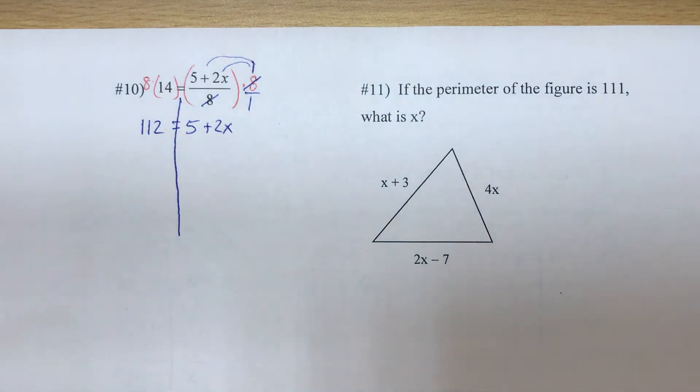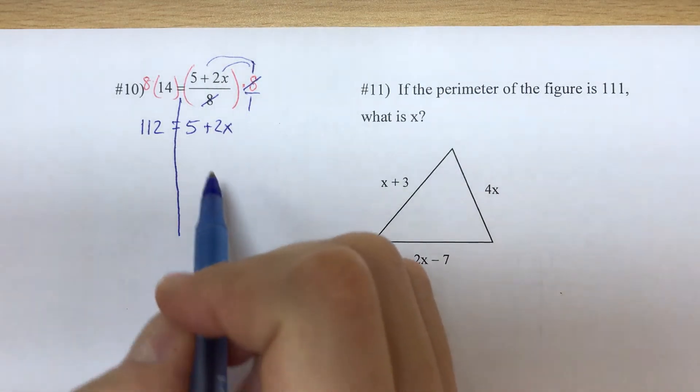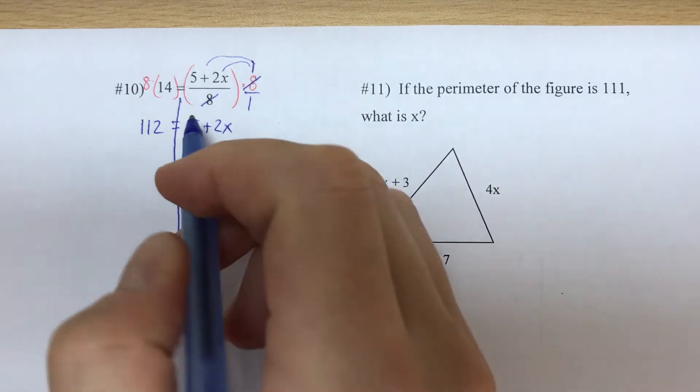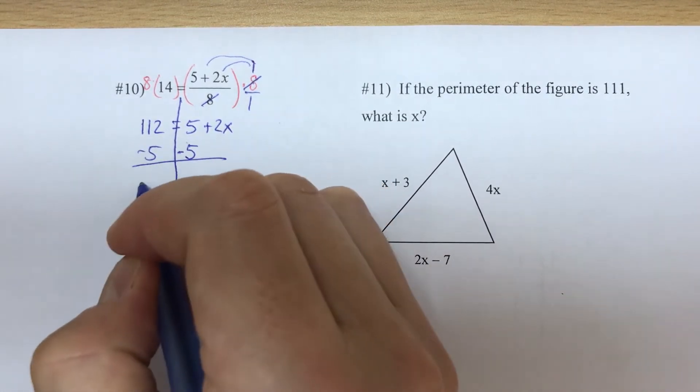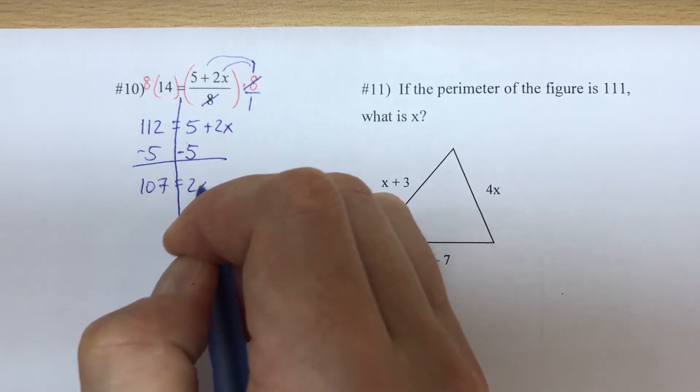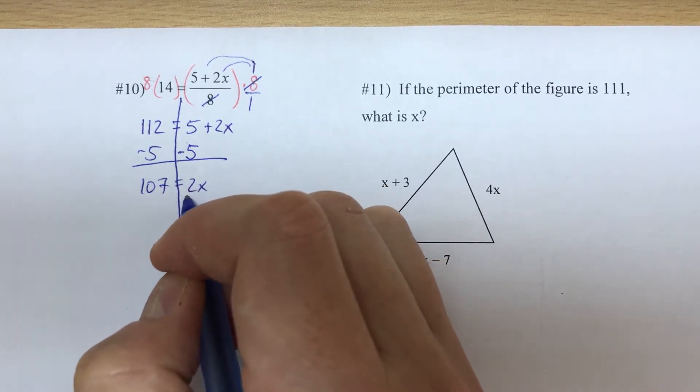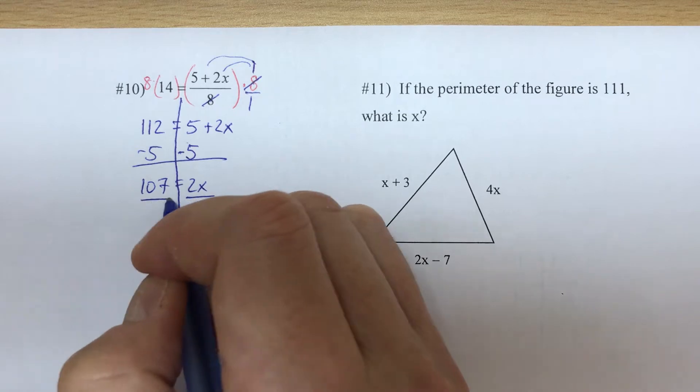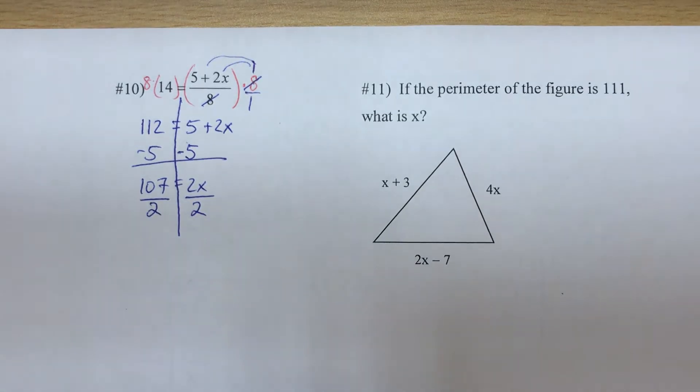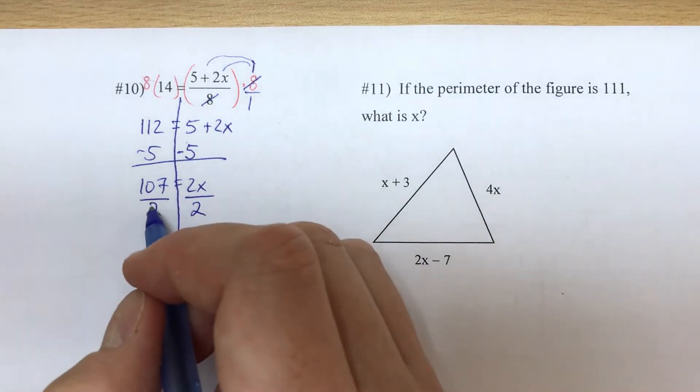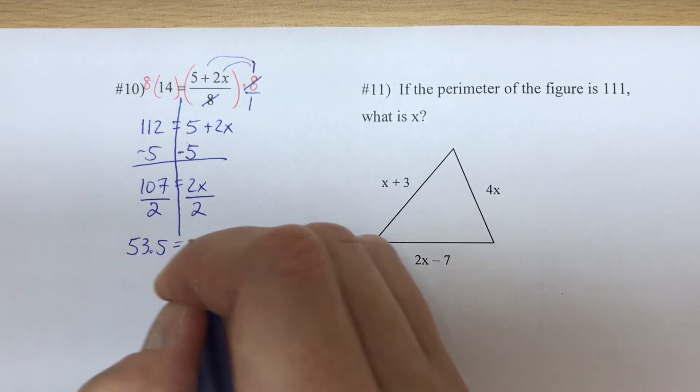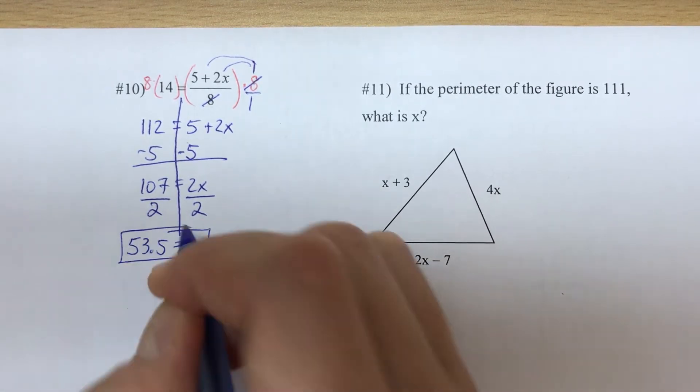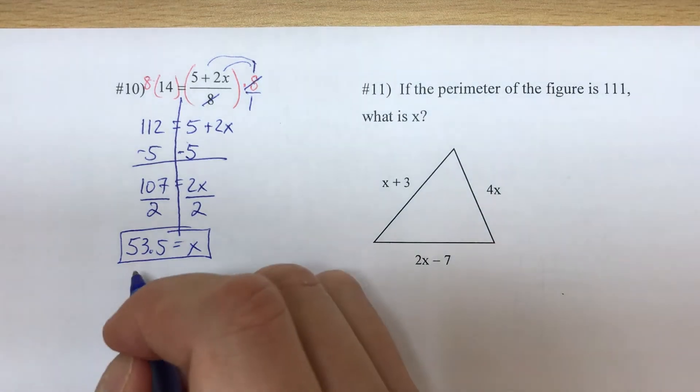Now that the fraction is gone, let's move the constant, which is the five, positive five, so we'll go minus, minus both sides. 107 equals 2x. Two times x - to undo that we do the division, the inverse of multiplication. 107 divided by two is a decimal, 53.5 equals x.